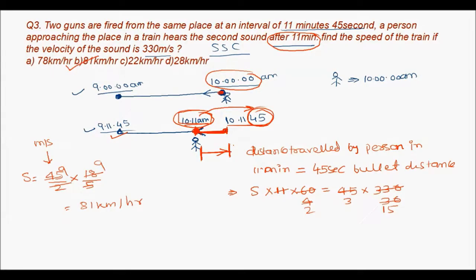To summarize: at 10:00 am the person was at a certain position. The second gun fired at 9:11:45 am — the person would hear it at 10:11:45 am, but being on a train moving toward the source, hears it at 10:11 am. The distance traveled by the person in 11 minutes equals the distance covered by sound in 45 seconds, giving a train speed of 81 km/h. Thanks for watching!